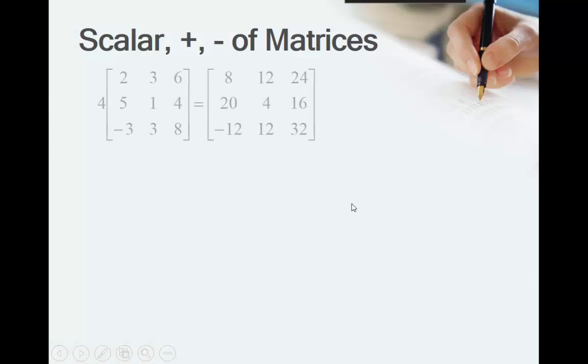So, scalar addition. If I'm going to times a matrix by a scalar or by a number, what it means is I have to times every value in the matrix by that. 2 becomes equal to 8, 3 becomes equal to 12, 6 becomes 24. You might do this if you were trying to make 400% increase. So, if I want to make 400% increase, I would times that by 4.